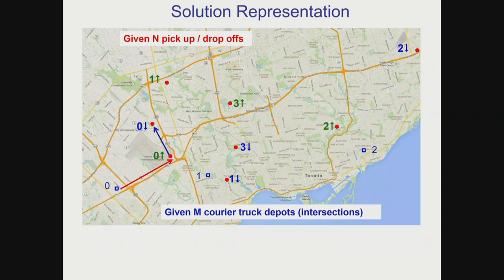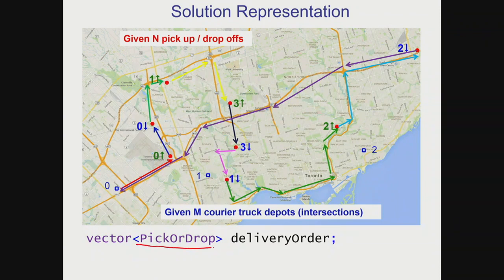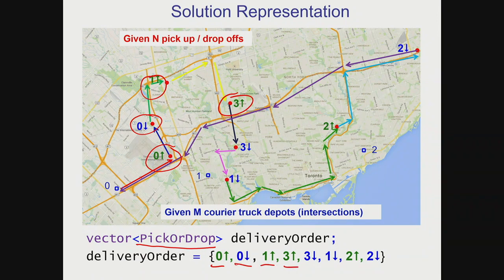So how can I store the delivery order more succinctly? I could make a data type for pickup or drop-off — a struct that says: what am I? Am I a pickup? Am I a drop-off? Am I a depot? That's one member of the struct. The second member could be the intersection ID. With a vector of those, I can store the delivery order. For example: pickup zero, drop-off zero, pickup one, pickup three, and so on.